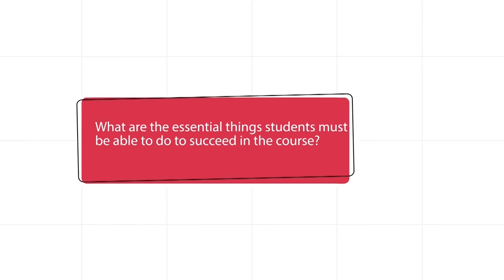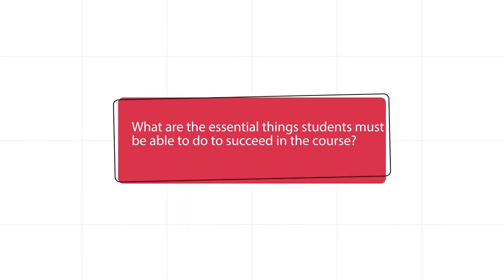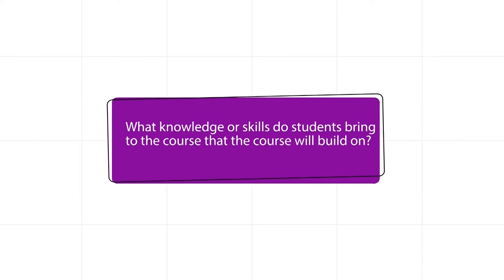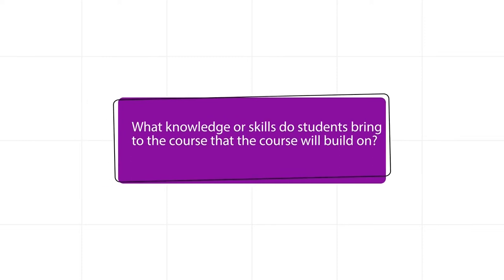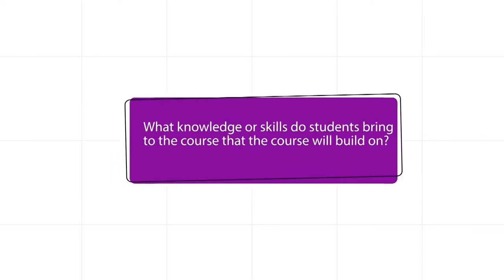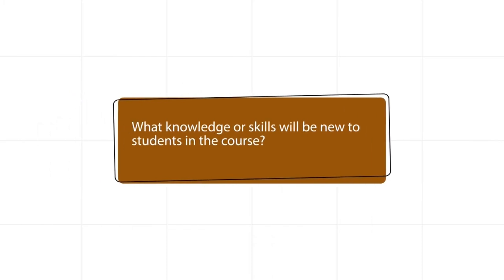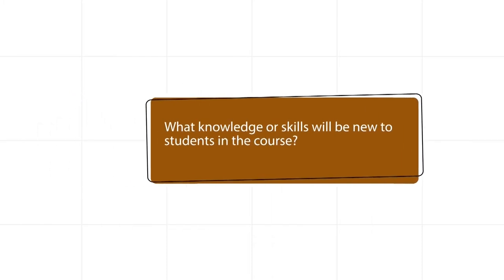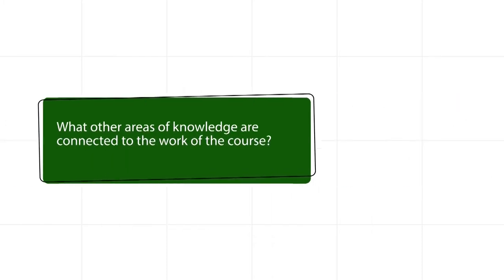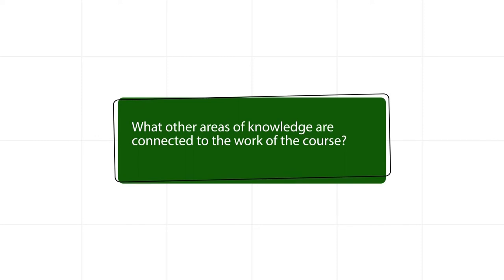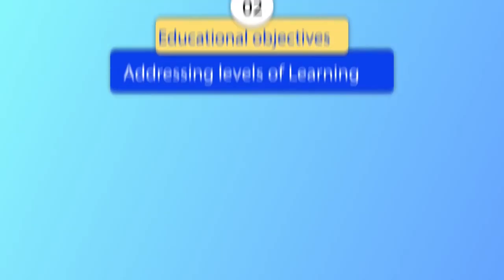What are the essential things students must be able to do to succeed in the course? What knowledge or skills do students bring to the course that the course will build on? What knowledge or skills will be new to students in the course? What other areas of knowledge are connected to the work of the course?